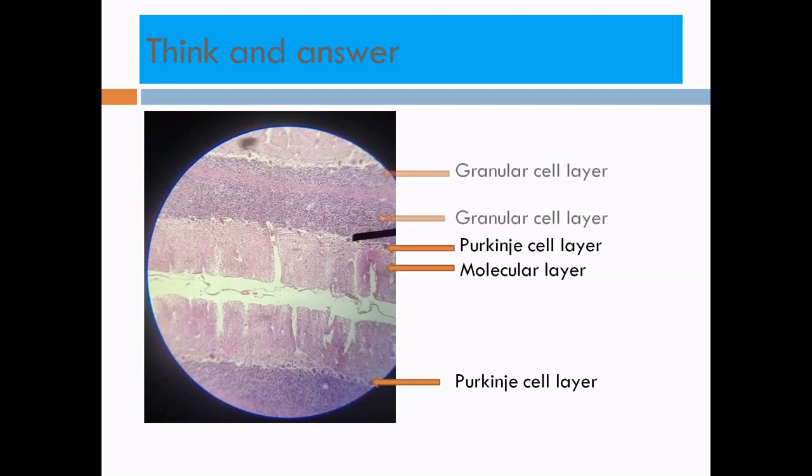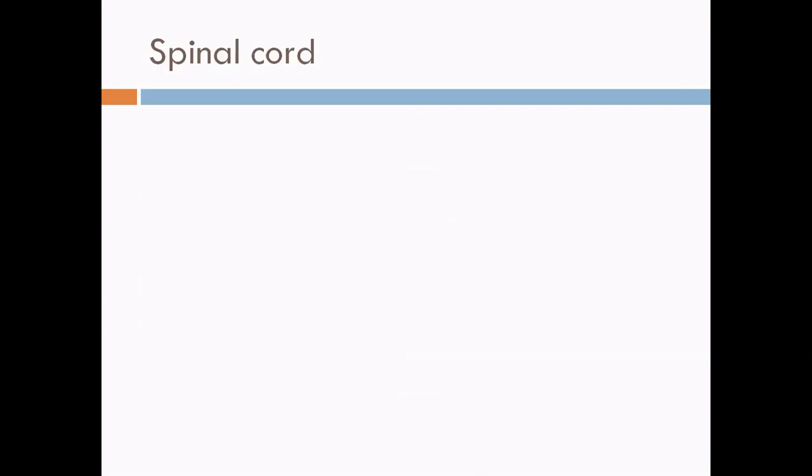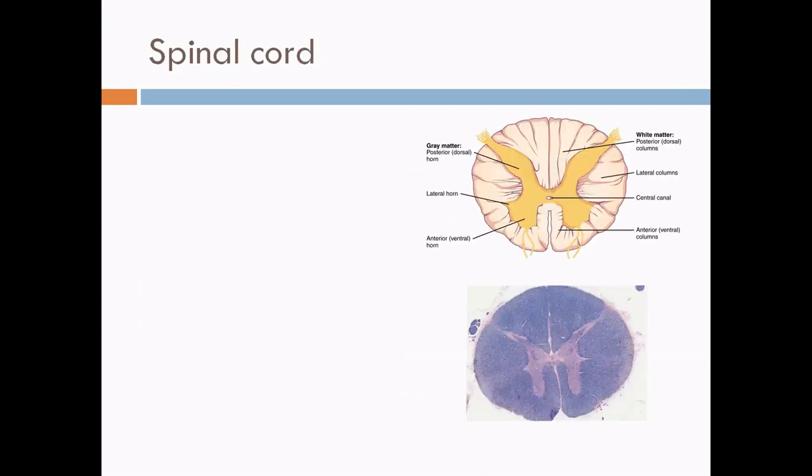The spinal cord. Let us remember that in the spinal cord there is the H shape or butterfly shape grey matter which is located internally and the white matter is located externally.